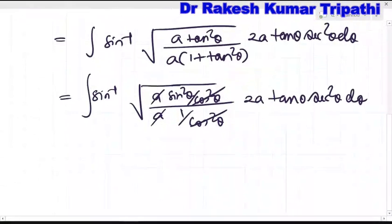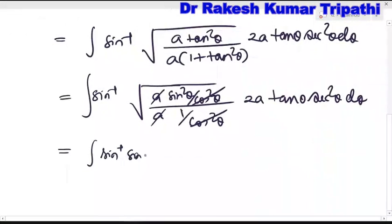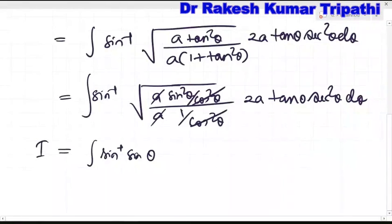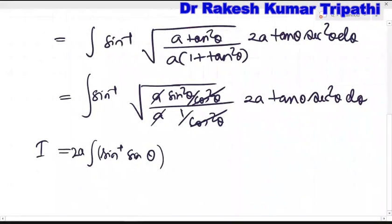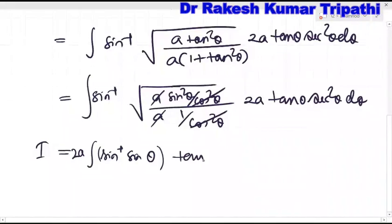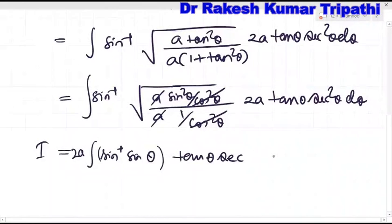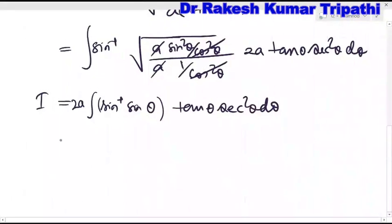After simplification, the integral becomes I = ∫sin⁻¹(√sin²θ) · 2a·tanθ·sec²θ dθ. Since √sin²θ = sinθ, we have sin⁻¹(sinθ) = θ. So the integral reduces to I = ∫θ · 2a·tanθ·sec²θ dθ.